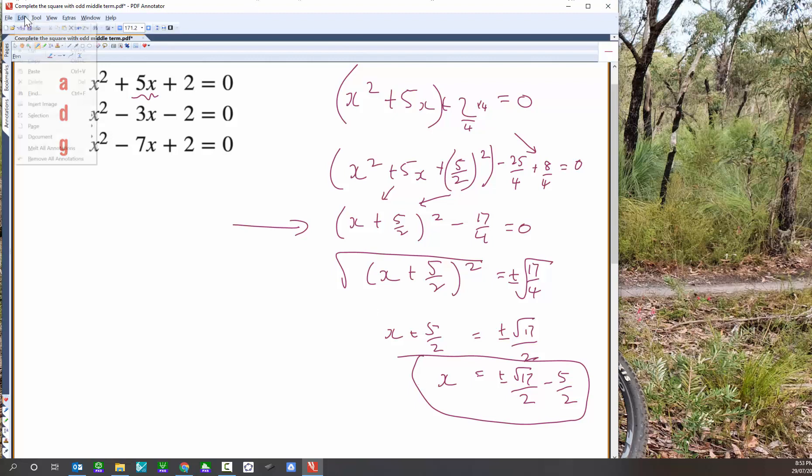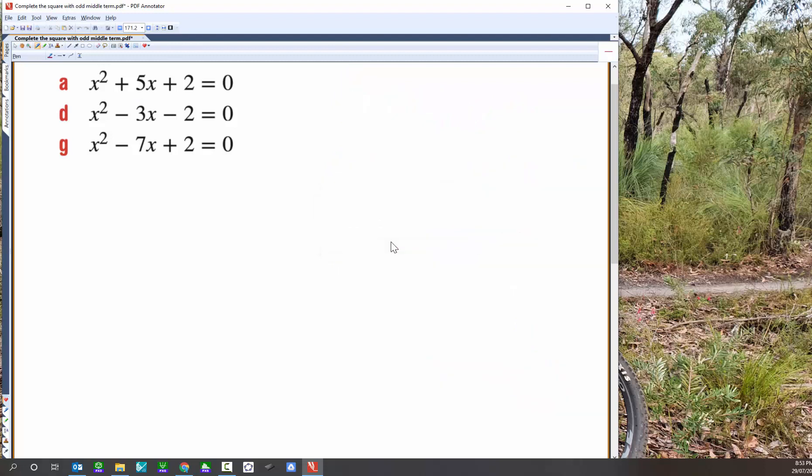Okay, let's try the next one. Okay, so the next trinomial is x squared take 3x take 2 equals 0. All right, so incomplete square.